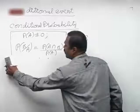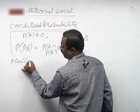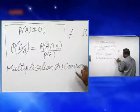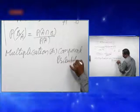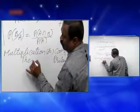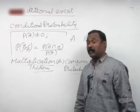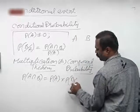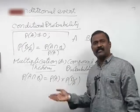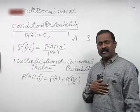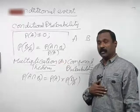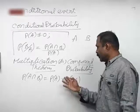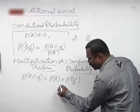We will now define the multiplication theorem, also called compound probability. To derive it, you write the definition of conditional probability and then cross-multiply to get the statement: P of A intersection B equals P of A into P of B given A.